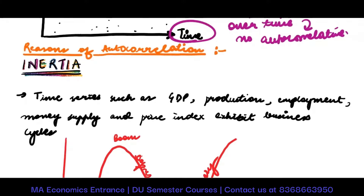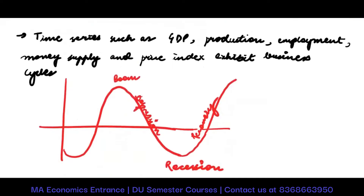What is inertia? When we talk about time series variables such as GDP, production, employment, and money supply, they exhibit business cycles. Every business cycle has four parts: boom, depression, recession, and recovery.